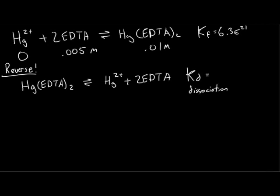To find the Kd of a complex, this will just be 1 over its own Kf. We'll end up with 1 over 6.3 times 10 to the 21st power. If we do the division, we'll end up with 1.59 times 10 to the negative 22nd. That's going to be the K value for this reaction to the left of it.